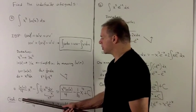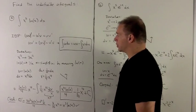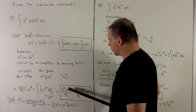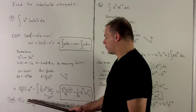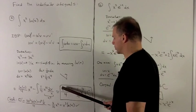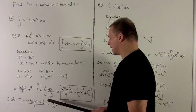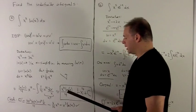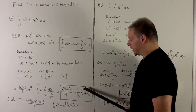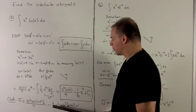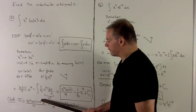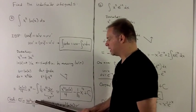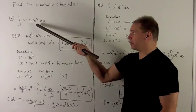Let's check this by taking the derivative of the answer. Using the product rule: 4x cubed times natural log of x, plus x to the 4th times 1 over x, all over 4. Then the 4 comes down giving x cubed, so we get a 1/4 x cubed which cancels with the 1/4 x cubed from the second term. The 4s cancel, leaving x cubed times natural log of x, which agrees with the original integrand.